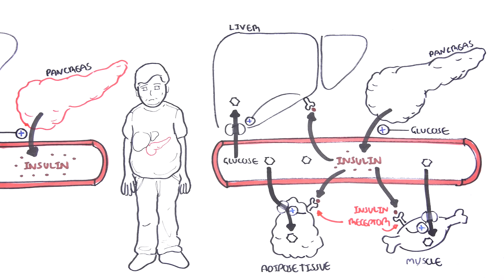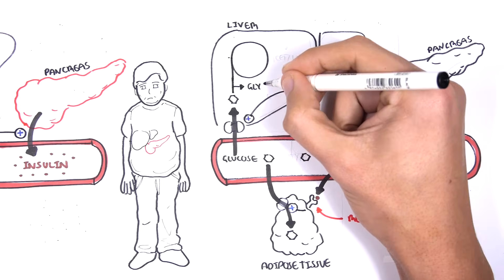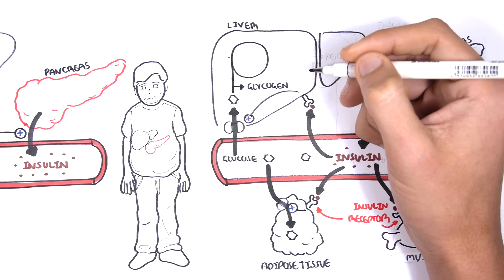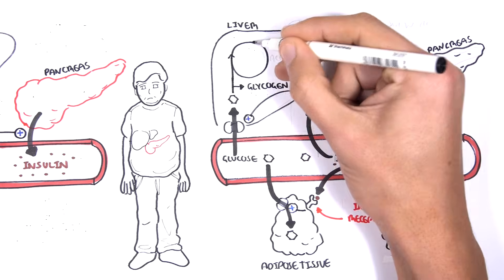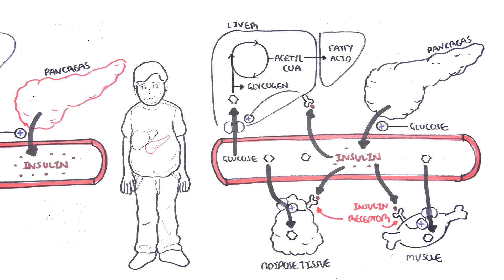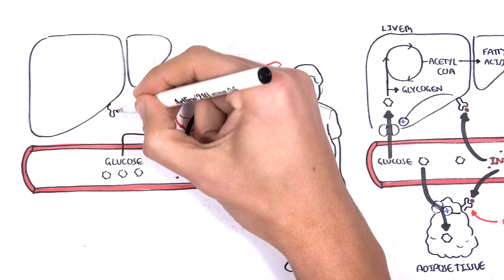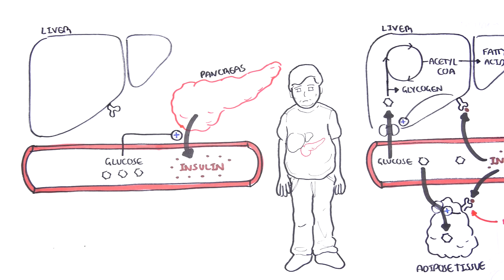Insulin also promotes glucose storage. In the liver, insulin stimulates glycolysis and glycogenesis to store glucose as glycogen. Insulin also stimulates glucose to be stored as fat, which will subsequently be transported to adipose tissue. So going back to our first diagram, remember high blood glucose stimulates insulin release.